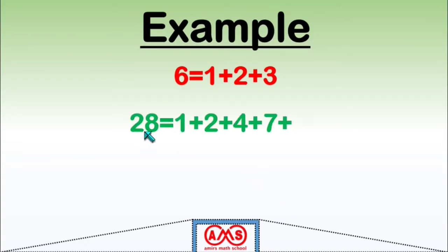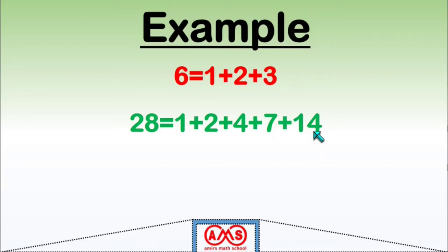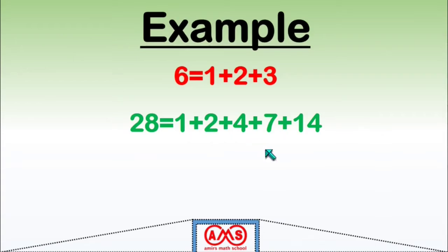The next example is 28. The proper divisors of 28 are 1, 2, 4, 7, and 14. The sum of all these proper divisors equals 28, so 28 is a perfect number. Additionally, 1 + 2 + 4 + 7 + 14 + 28 = 56, which is double 28 — confirming 28 is a perfect number by the inclusive sum definition as well.